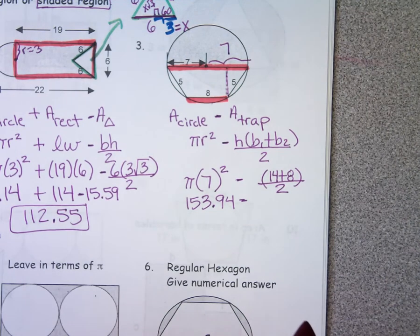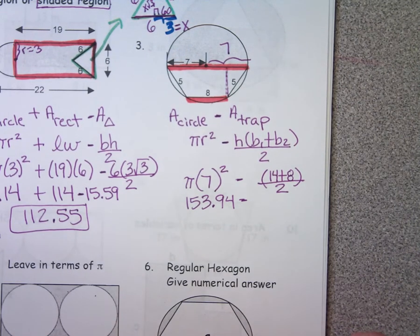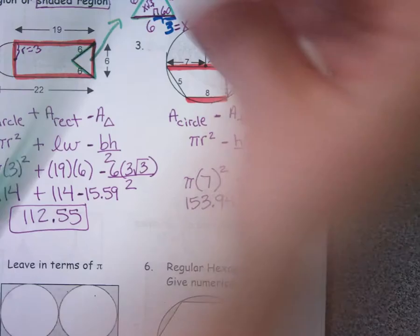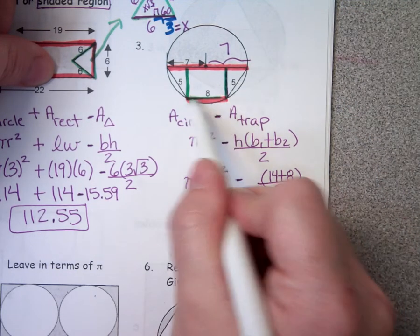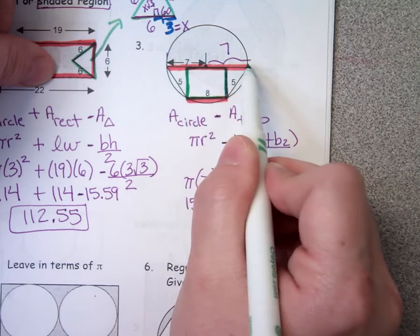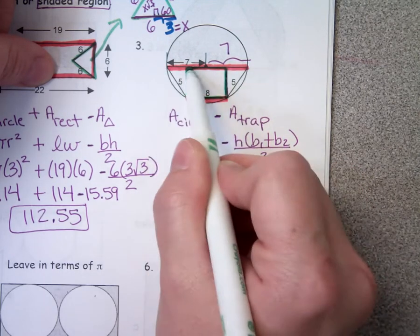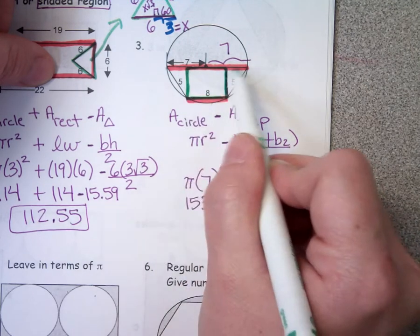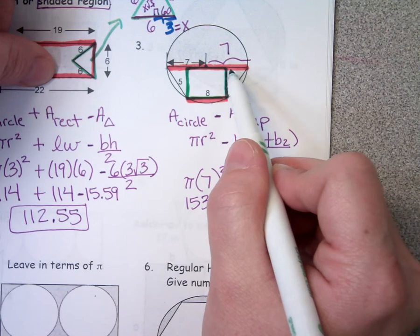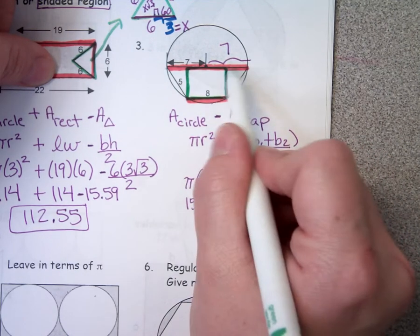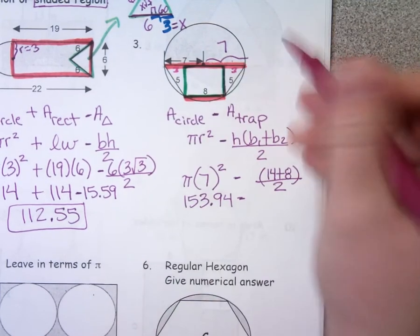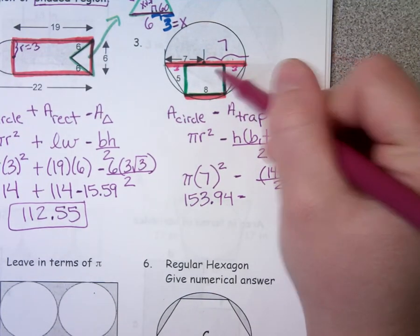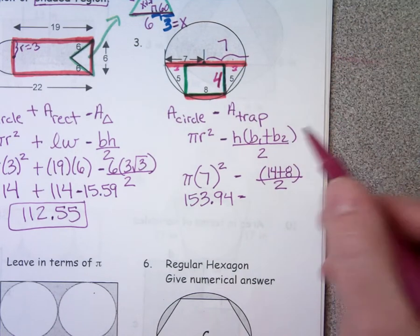Now I need to work on my height. If this piece right here is eight, then this piece right here is also eight. It's all the way across is fourteen, and this chunk makes up eight, so this piece and this piece must add to be six. If they're both the same, they'd both be three. Everybody see where my three came from? So that is a three, and that is a three over there. And then that's a four — this is our three, four, five triangle. So the height of our trapezoid is four.